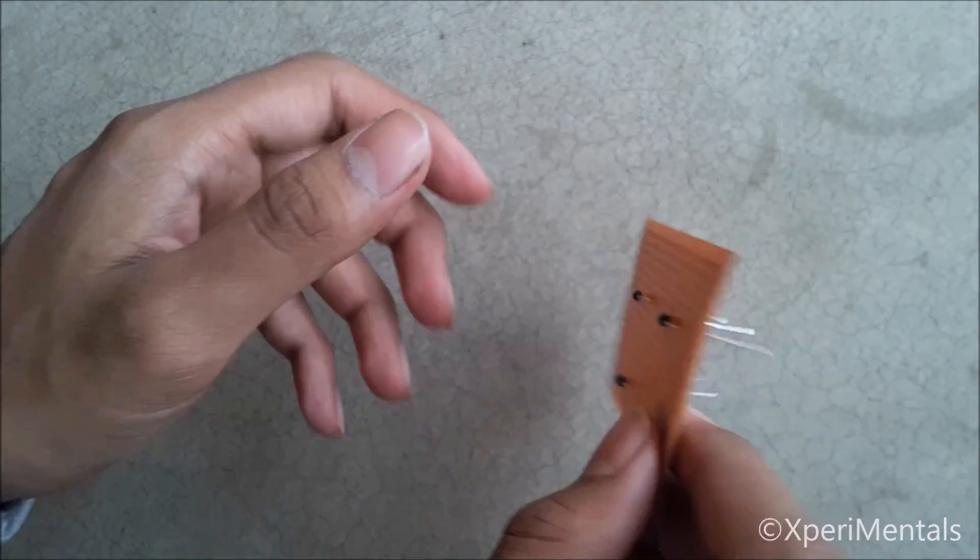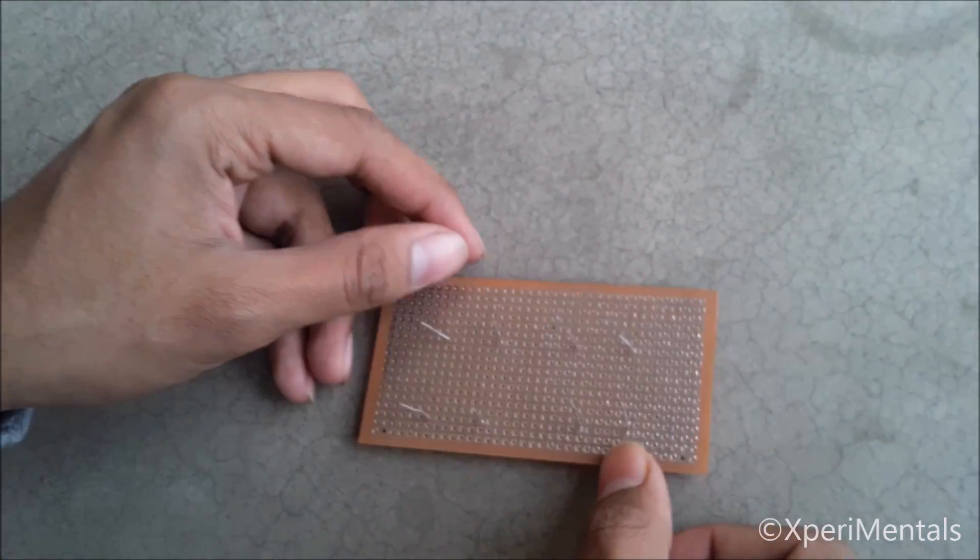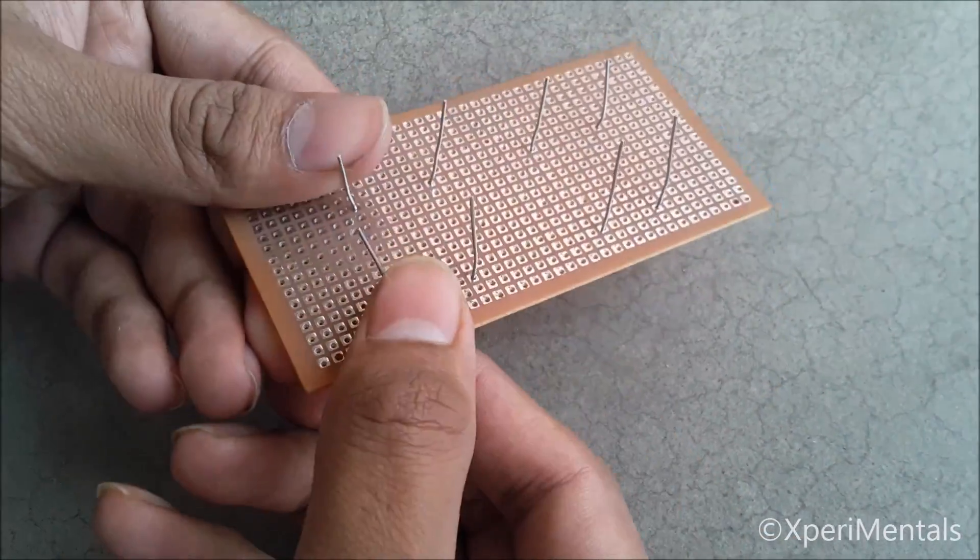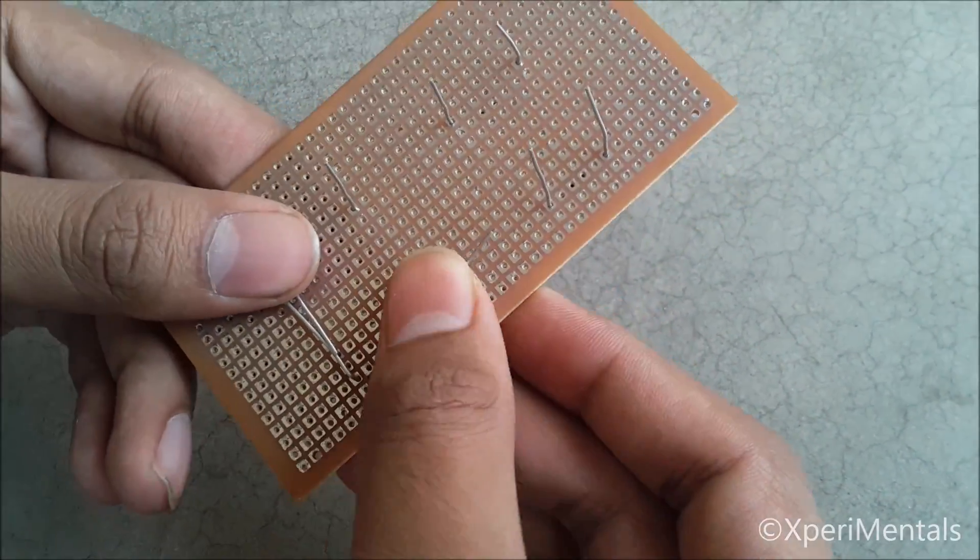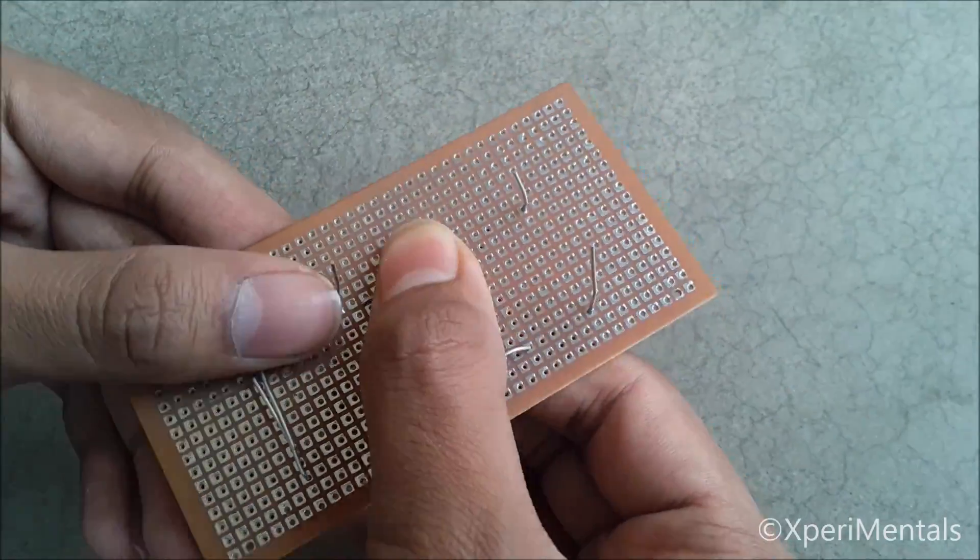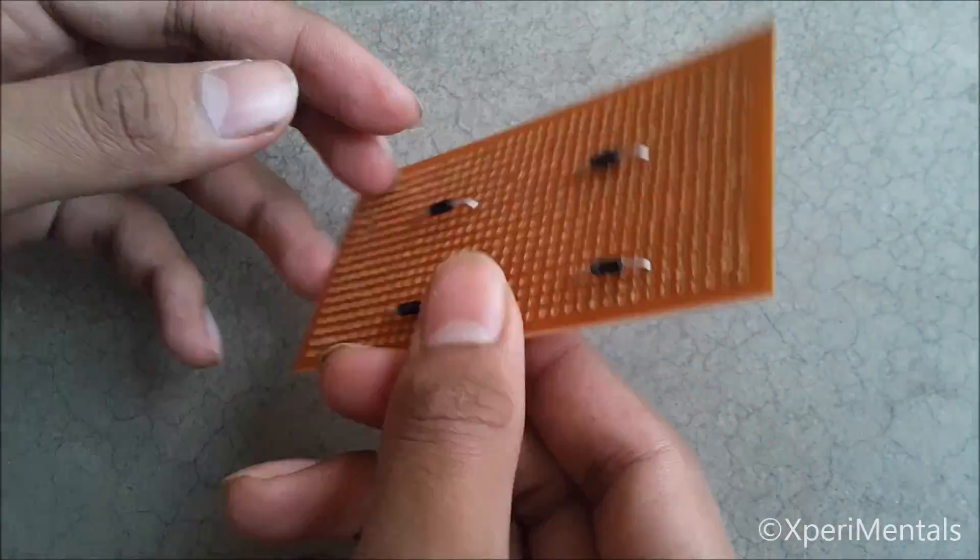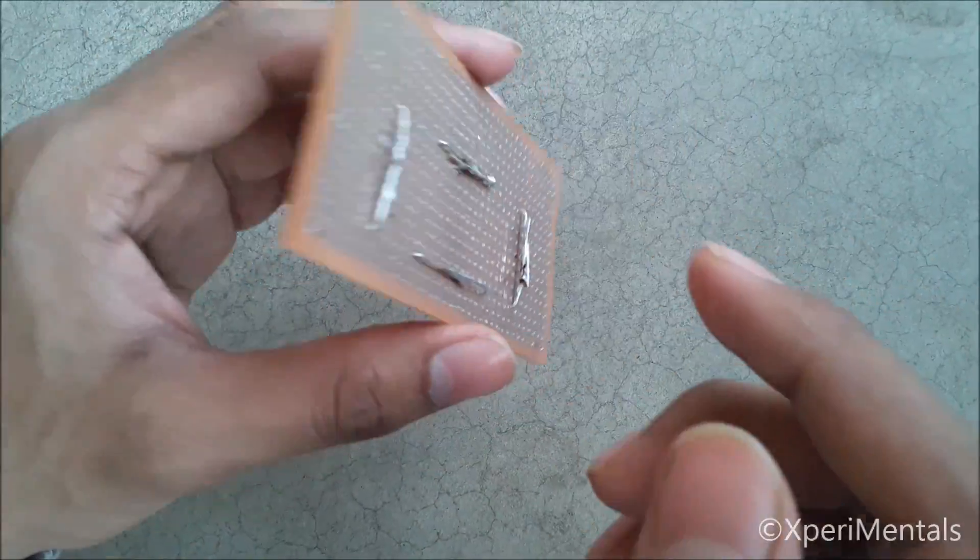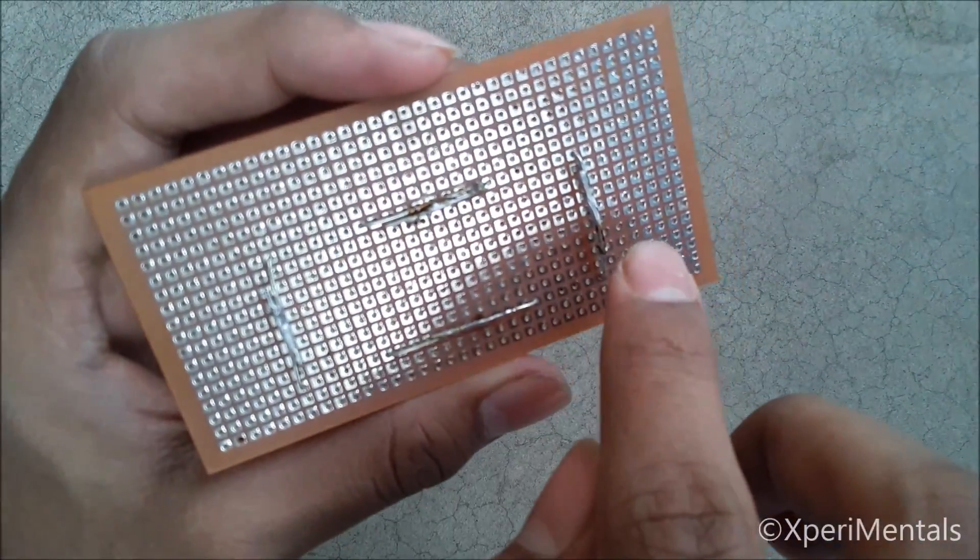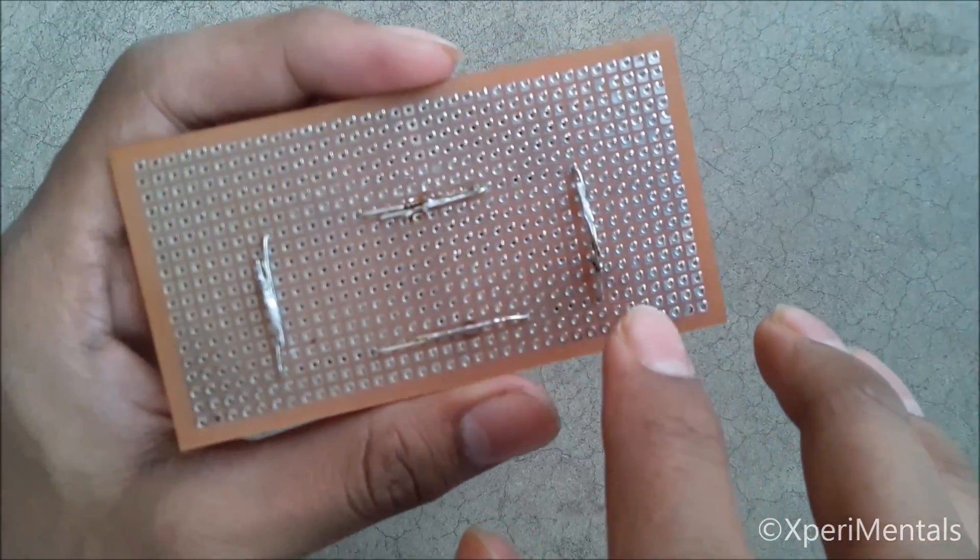Now I will solder these diodes. You can see we have soldered all the diodes as shown in the circuit diagram. We are stepping towards the next step.